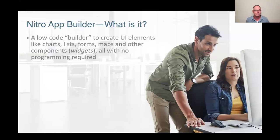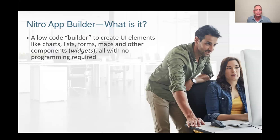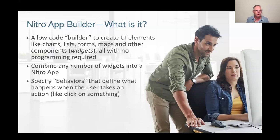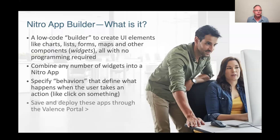The Nitro App Builder is really classified as a low-code builder. With no coding, you can create user interface elements — charts, maps, other components, anything visual. We call those widgets. As a programmer, you can take any of these visual elements and put them on a canvas and they become an application. We also have behaviors, which are actions the user can take — like clicking a button updates a list or a map. Once you put that together as an application, you deploy it through the Valence portal.